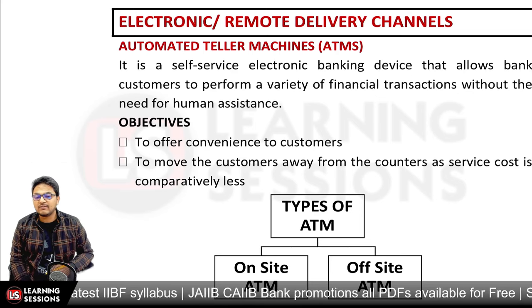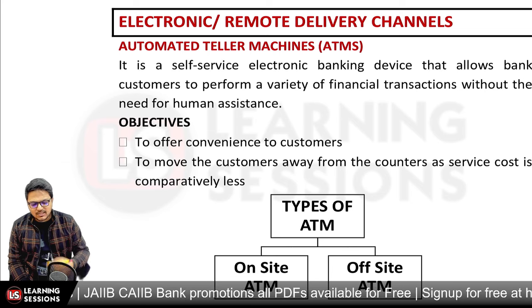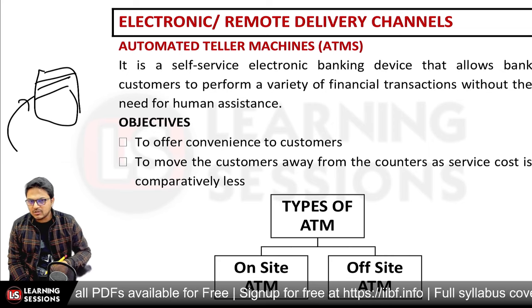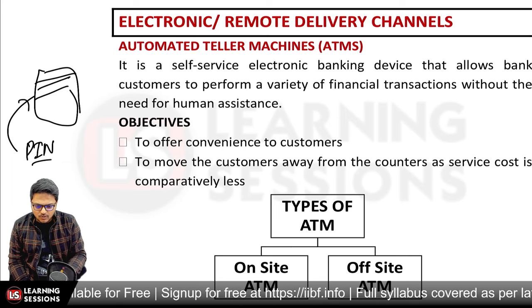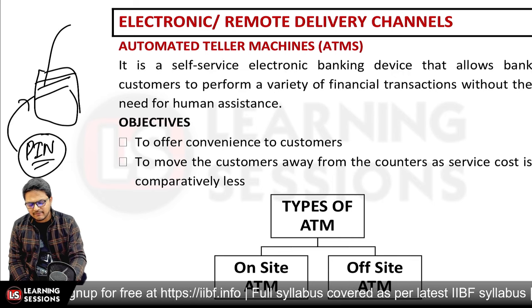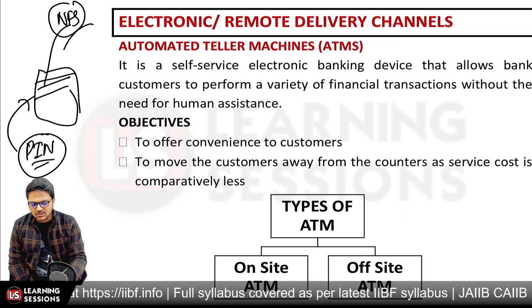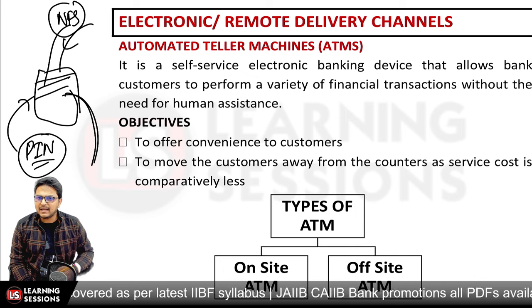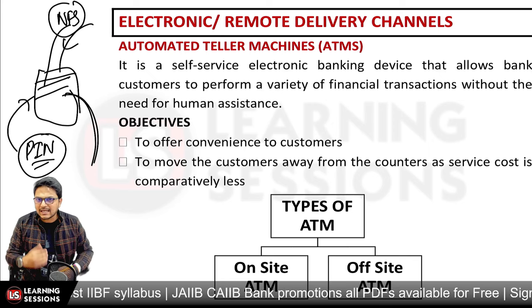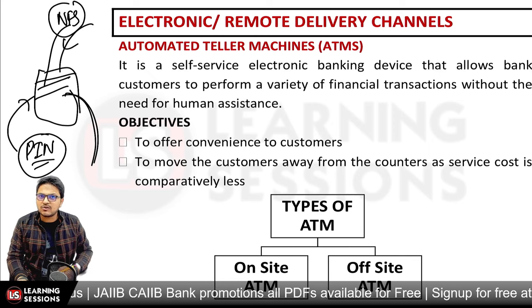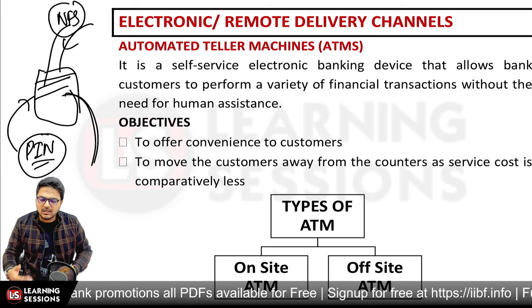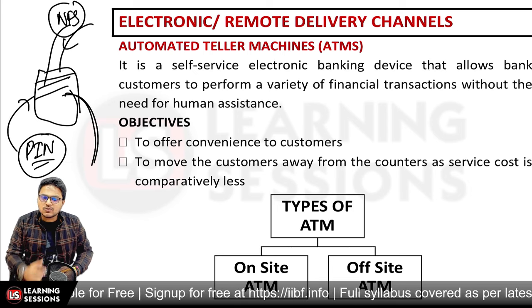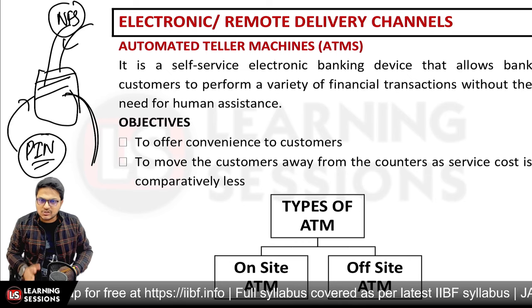Now for electronic and remote delivery channels: ATMs are Automated Teller Machines — self-service electronic devices. You visit the ATM, insert or swipe your card, enter your PIN (Personal Identification Number — a four-digit numeric code), and the transaction is verified through the NFS (National Financial Switch) or ATM switch. The transaction is either authorized (cash dispensed) or rejected.